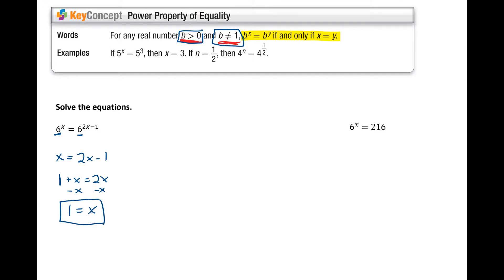Plug that back in to check it. 6 to the first power is equal to 6 times 2 minus 1. 6 to the first power is equal to 6 to the 1. 6 is equal to 6. Check. Got it.